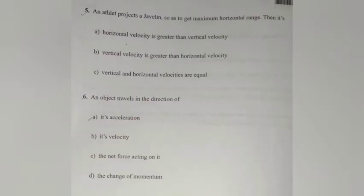Question 5. An athlete projects a javelin so as to get maximum horizontal range. Then: A. Horizontal velocity is greater than vertical velocity. B. Vertical velocity is greater than horizontal velocity. C. Vertical and horizontal velocities are equal. Answer: C — vertical and horizontal velocities are equal.